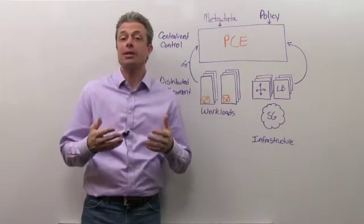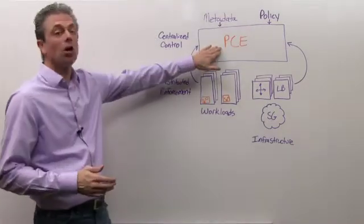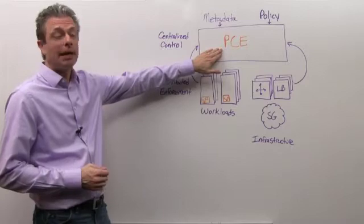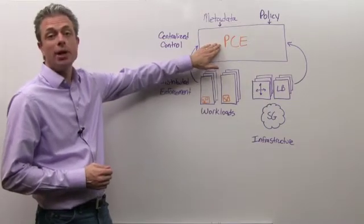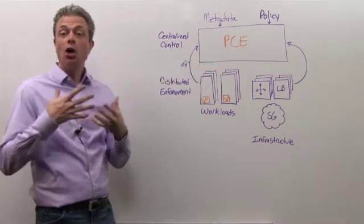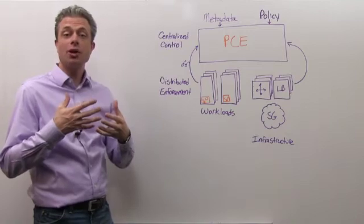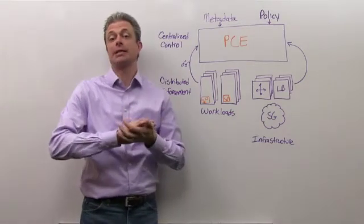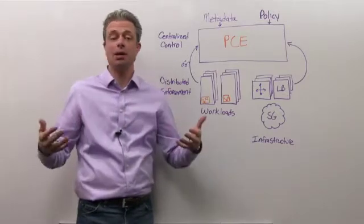At Illumio, our architecture begins with something that we call a policy compute engine, and this is the centralized point of control for all of the various inputs from the infrastructure, and it provides a centralized place from which to dispense policy.